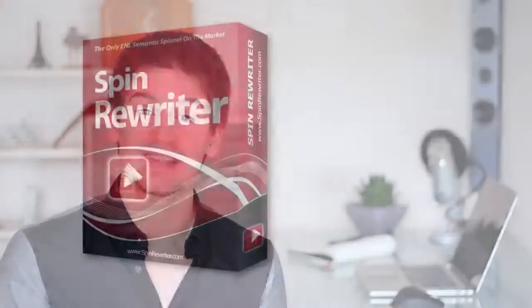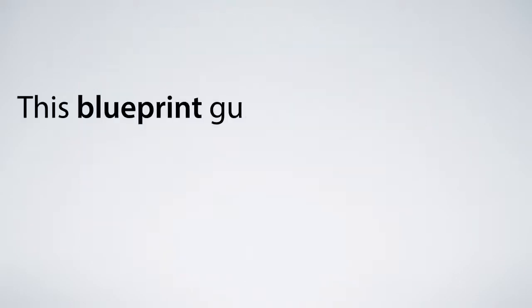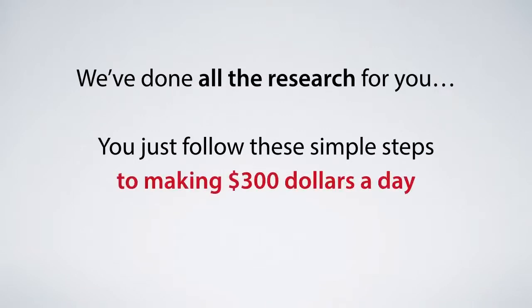This brings me to my next point: because we are right now still in the very early launch period, I've decided to just go all out with your bonuses. When you sign up today, you'll also be receiving our awesome step-by-step '34 Days to 7,000 Daily Visitors' SEO blueprint. This blueprint guides you by the hand and shows you how to use your unique articles to get consistent and reliable first-page rankings forever. We've done all the research for you — you just have to follow these simple steps and you can start making $300 a day within a month.